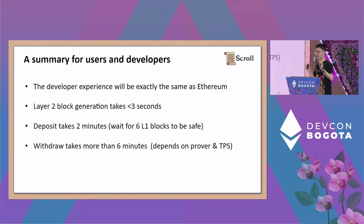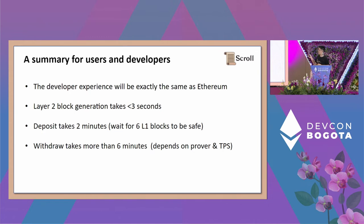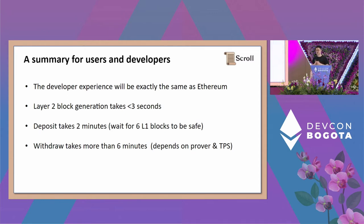A quick summary for users and developers: the developer experience will be exactly the same as Ethereum layer one. For concrete performance: layer two block generation takes less than three seconds, meaning users get pre-confirmation within three seconds — it can be brought down to one second as we move to multi-block aggregation. Deposits take about two minutes because you need to wait for six layer one block confirmations — that's not because of us, but because of layer one. Withdrawals take around six minutes or more depending on network load — typically two minutes to one hour, but the fastest proof generation for one block is already six minutes.